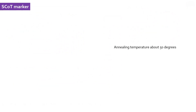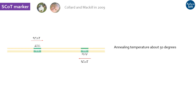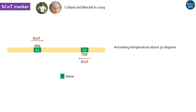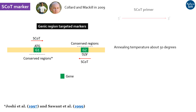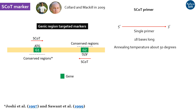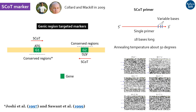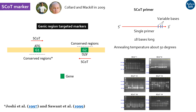SCoT markers are comparatively new markers developed by Collard and McGill in 2009. Unlike RAPD, AFLP or ISSR, SCoT markers are designed using short conserved sequences flanking the start codon, and hence belong to the gene-targeted marker category. For SCoT primer amplification, single 18-base-long primers which act both as forward and reverse primers are used. Different SCoT primers differ in one or more bases at the 3' end, and all these primers produce different amplification profiles, as shown in the picture.